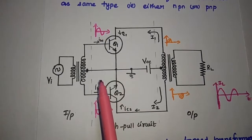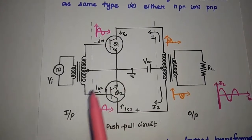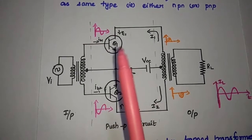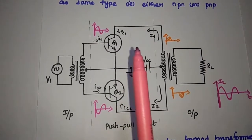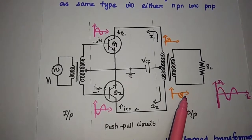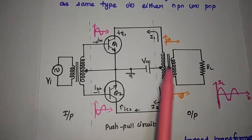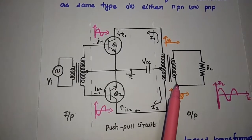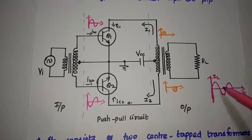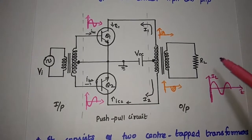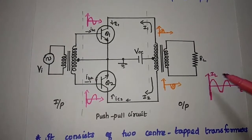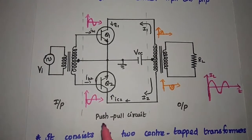For the negative half-cycle, Q2 becomes forward-biased and starts conducting current, while Q1 is in the off-state. At that time, we can get the negative half-cycle as the output in the lower part of the primary transformer. Finally, we can get 360 degrees — that is the full cycle of the output signal — across the load RL. This is the operation of the class B amplifier using the push-pull circuit.